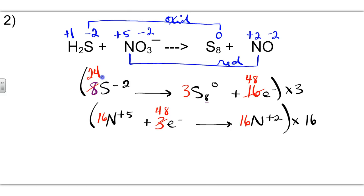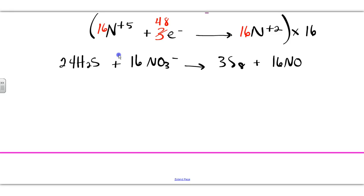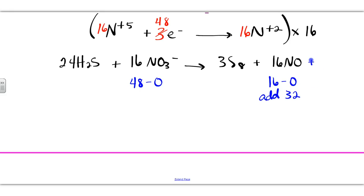Now we place the new coefficients back into the reaction: twenty-four in front of H₂S, sixteen in front of HNO₃, three in front of S₈, and sixteen in front of NO. Rewriting: 24H₂S + 16HNO₃ yields 3S₈ + 16NO. We confirm masses: twenty-four sulfurs on each side, sixteen nitrogens on each side. Balancing oxygens: sixteen times three gives forty-eight on the left; sixteen on the right — so we need thirty-two more, and we add thirty-two waters on the right.